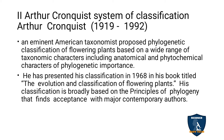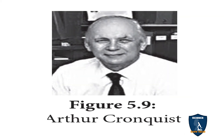Arthur Cronquist (1919–1992), an eminent American taxonomist, proposed the phylogenetic system of classification of flowering plants based on a wide range of taxonomical characters, including anatomical and phytochemical characters of phylogenetic importance. He presented his classification in 1968 in his book titled The Evolution and Classification of Flowering Plants. His classification is broadly based on the principles of phylogenetics and finds acceptance with major contemporary authors.